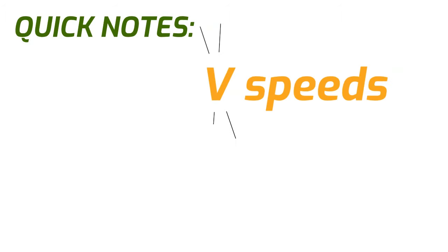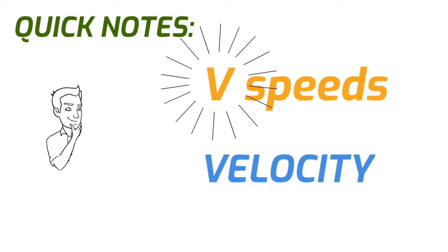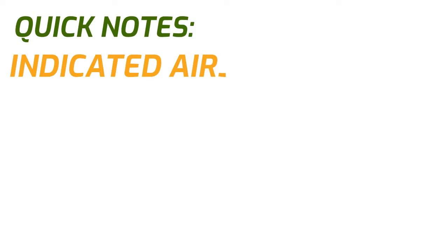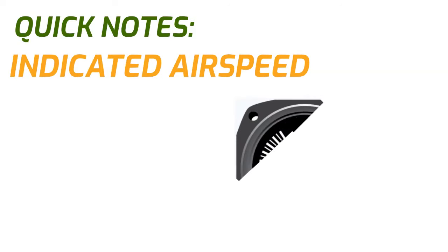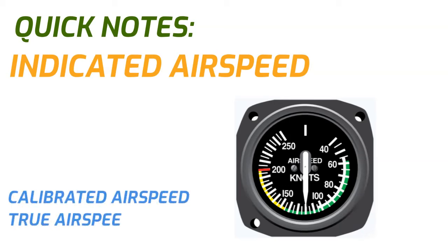Just a couple quick notes before we get started with this lesson. First, the letter V in these V-speeds stands for velocity — it's not just some made-up letter to confuse you. Second, when we discuss V-speeds, we're specifically talking about indicated airspeed. This is the airspeed that your airspeed indicator shows that you're going. Just be aware there are other types of airspeed.